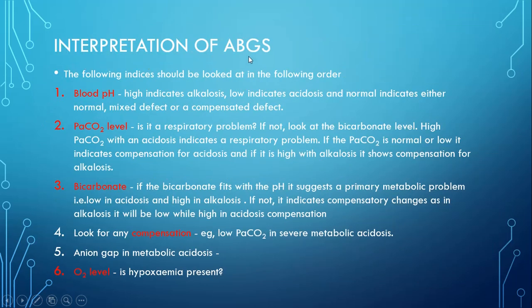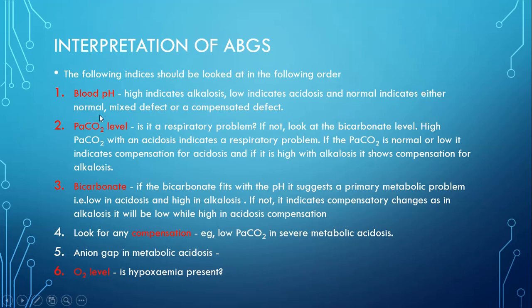Now we'll discuss the important topic of interpretation of ABGs. First, we look at the blood pH. If pH is low, there is acidosis; if high, there is alkalosis. A normal pH indicates either a normal ABG, a mixed effect, or a compensated state — because whenever there is a metabolic disorder, compensation also occurs.